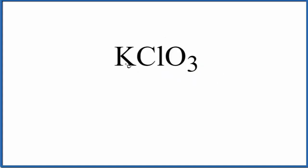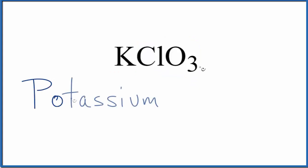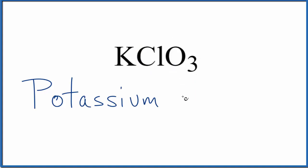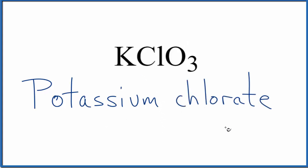Let's first write the name for K. That's potassium from the periodic table. Next, we have ClO₃, our polyatomic ion. You've either memorized that ClO₃ is the chlorate ion, or if you're allowed, you look it up on a table of polyatomic ions. So we have the chlorate ion, and that makes the name for KClO₃ potassium chlorate.